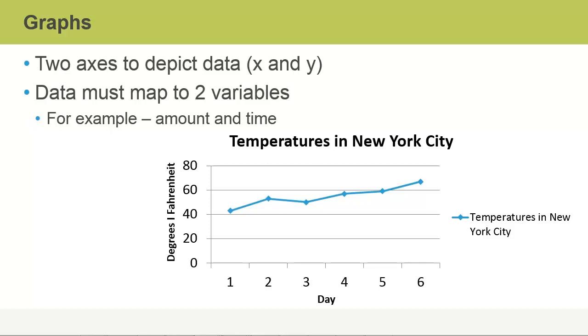Graphs are particularly powerful for conveying a trend or pattern in this type of data. For example, in this graph, we can infer that there is a warming trend occurring from day one to day six.